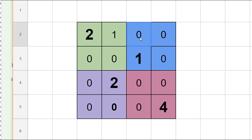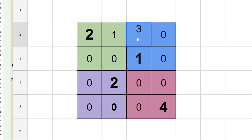A one is no good because there's already a one in the row. Two is no good because there's a two in the row, so we're going to replace this number with a three. Likewise, we're going to come over here and try a one — that doesn't work — then a two, then a three.